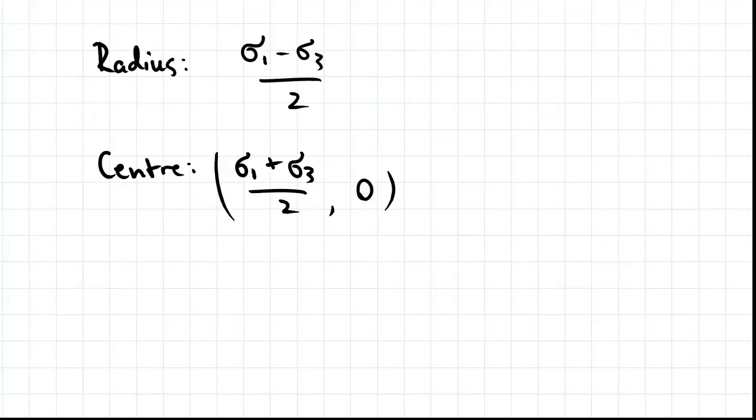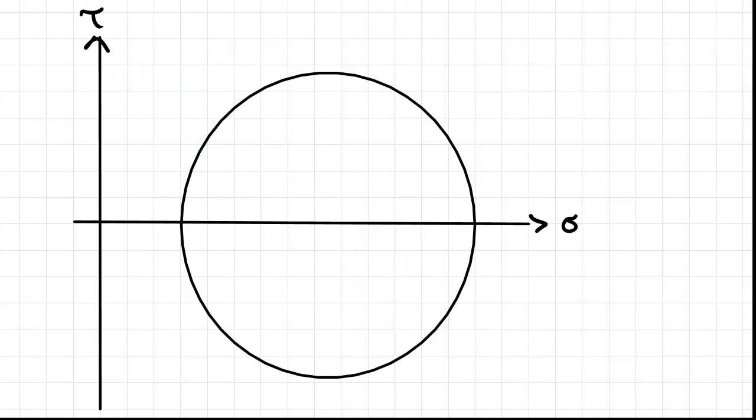The radius and centre of the Mohr circle can be written in terms of the principal stresses like so. So here we have the Mohr circle, and I'll just quickly label where the principal stresses would go.